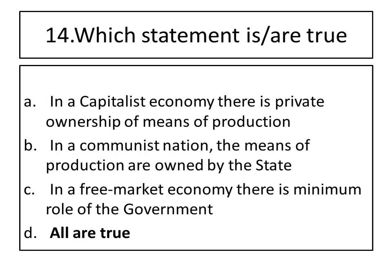Fourteenth question: which statements are all true? In a capitalist economy there is private ownership of the means of production. In a communist nation the means of production are owned by the state, i.e. government. In a free market economy there is a minimum role of government. The right answer is all are true.